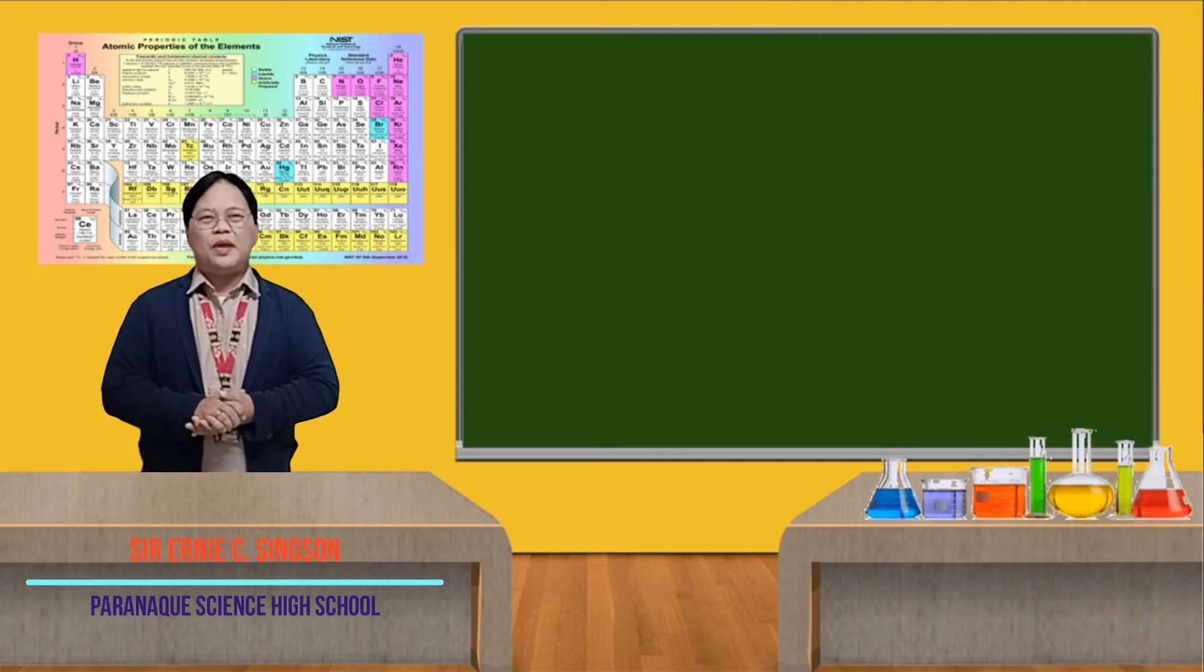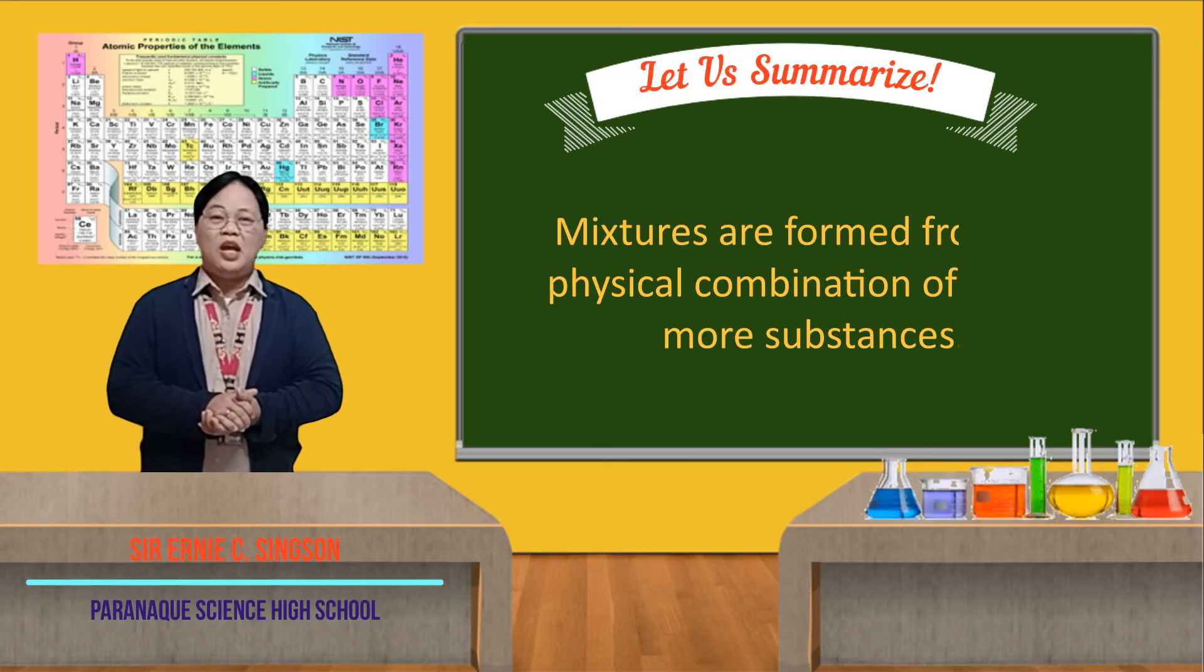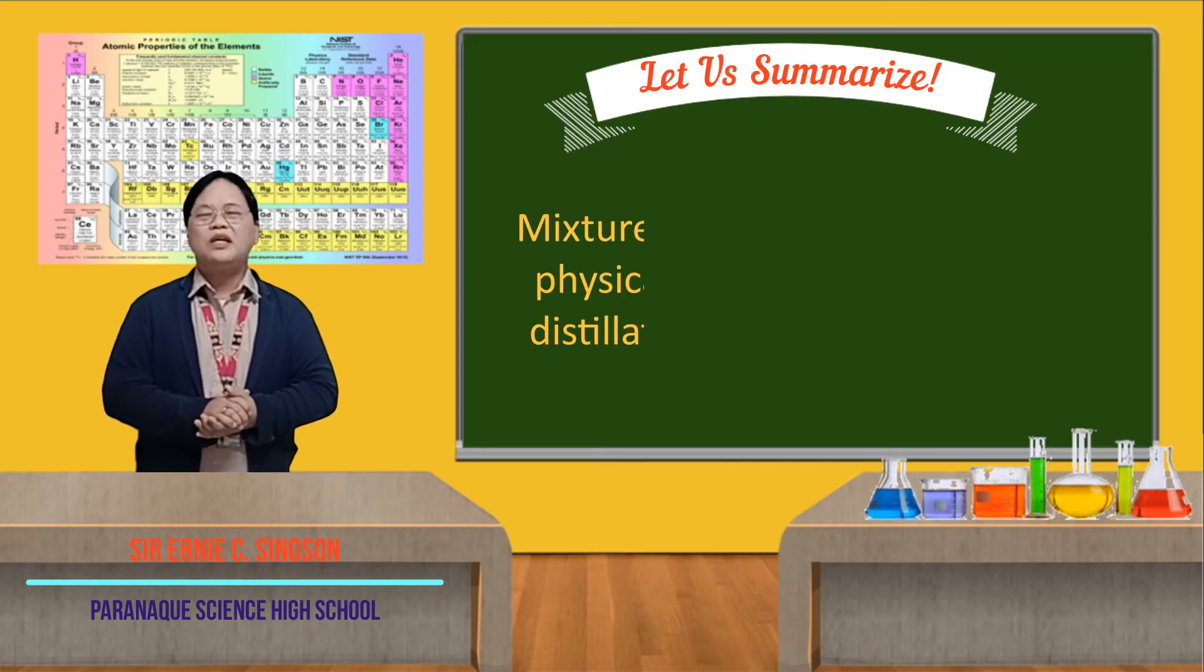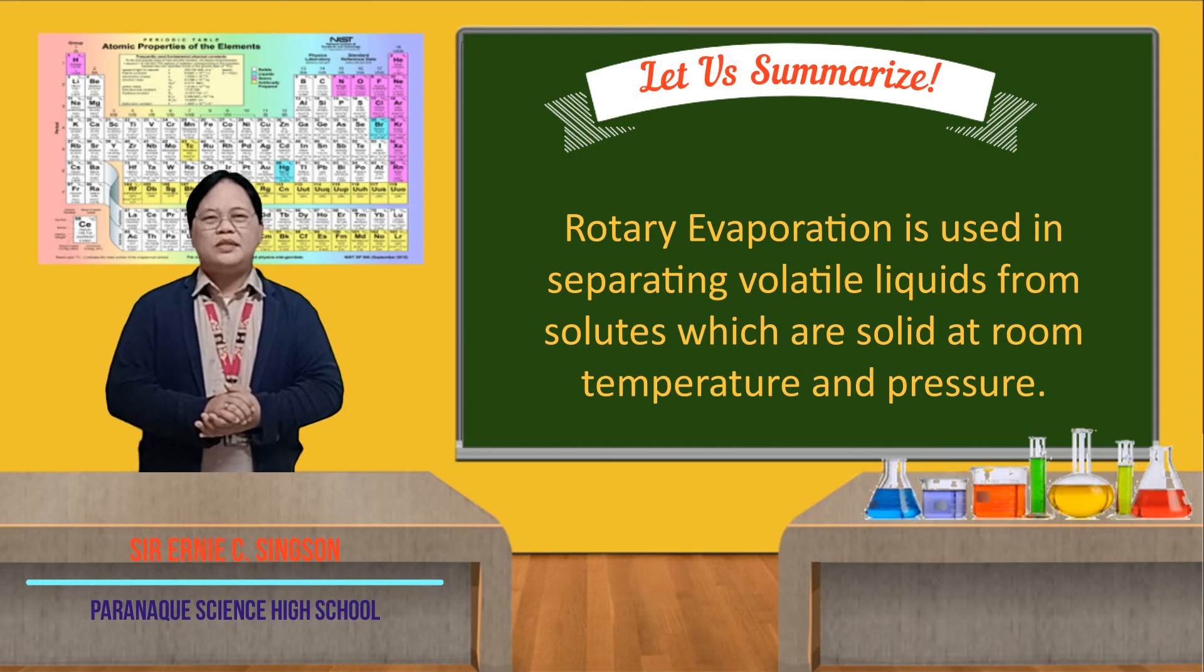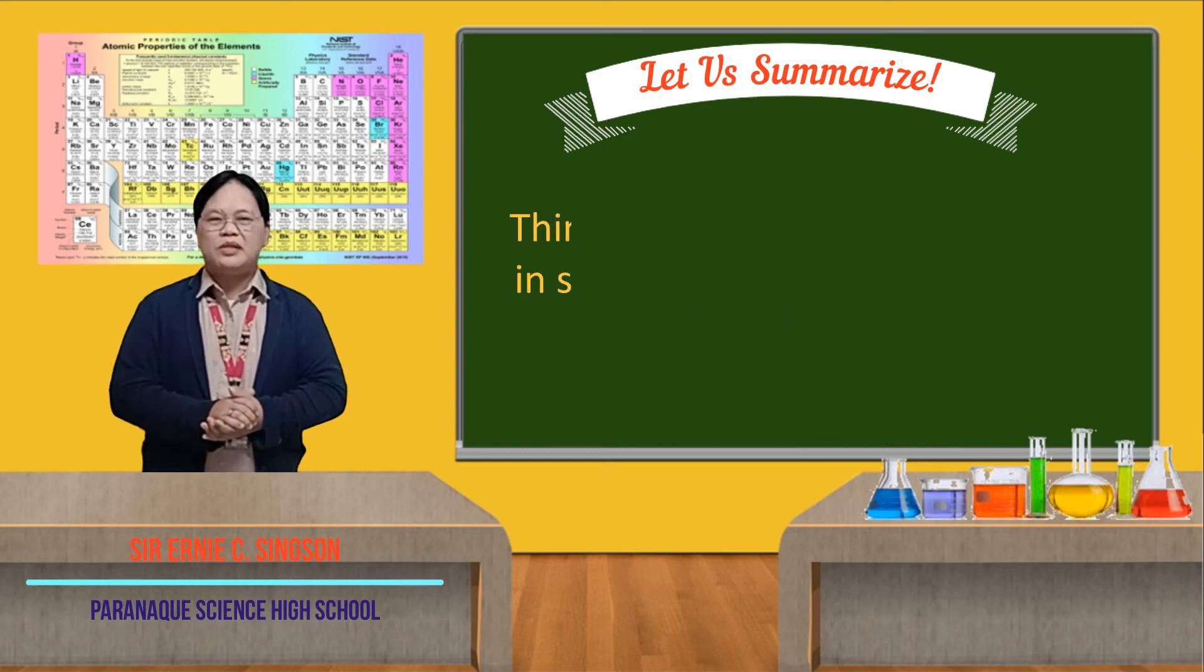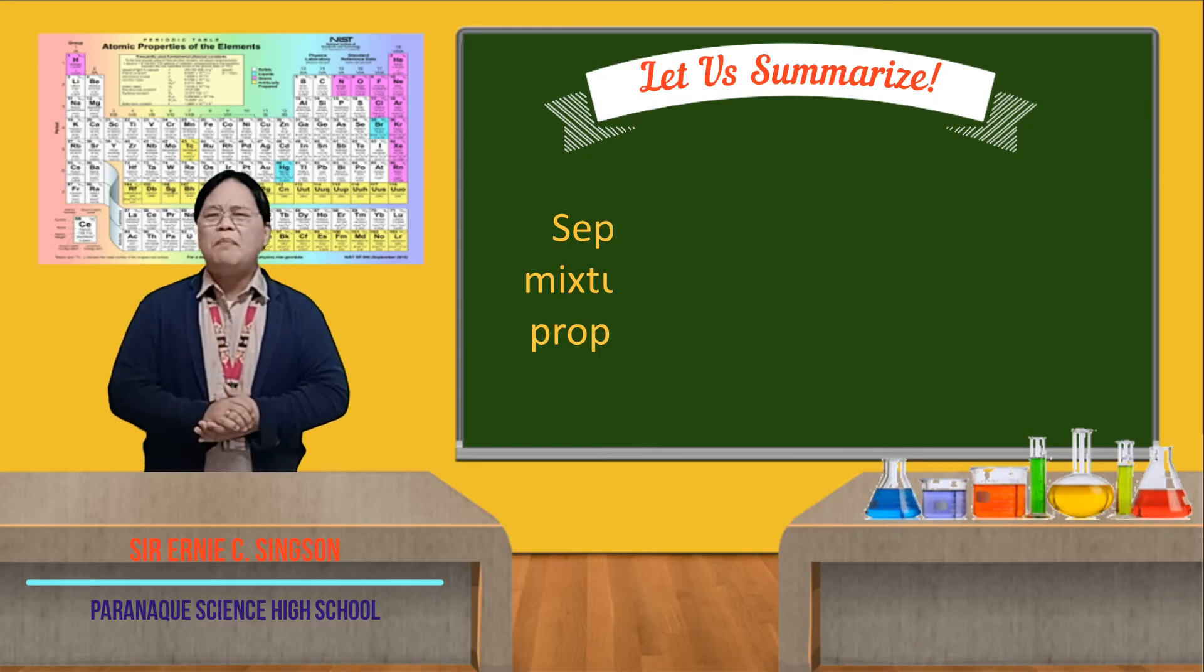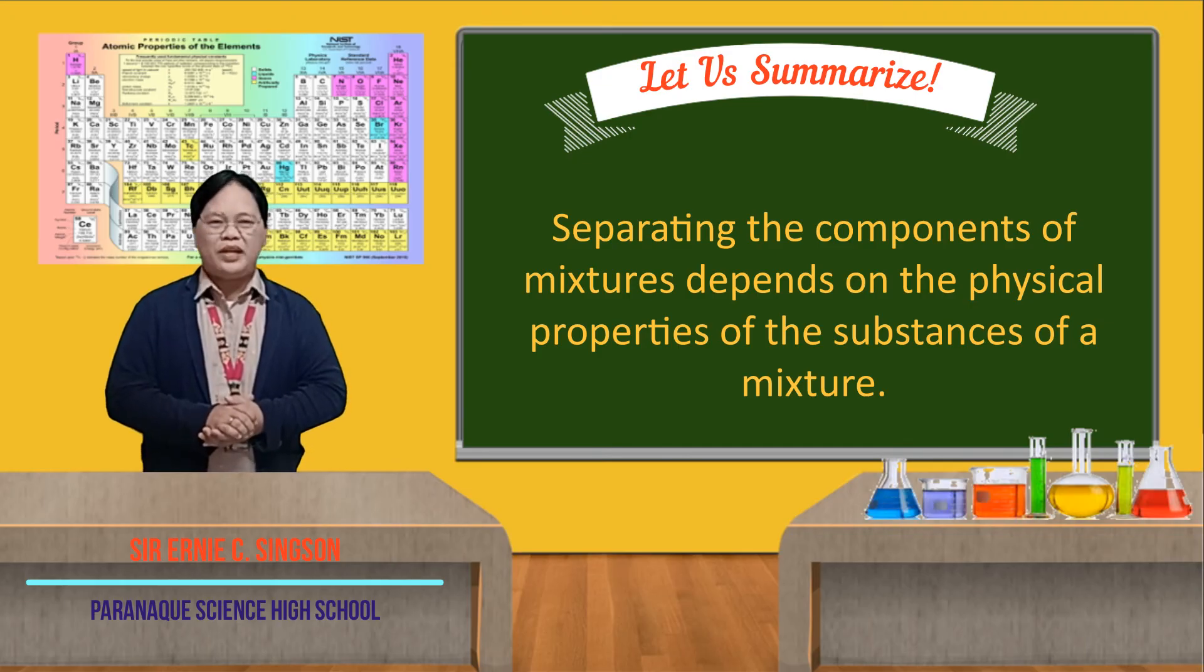Let us now summarize what we have learned for today's lesson. One, mixtures are formed from the physical combination of two or more substances. Two, mixtures can only be separated by physical means such as evaporation, distillation, chromatography among others. Three, rotary evaporation is used in separating volatile liquids from solids which are solid at room temperature and pressure. Four, thin layer chromatography is used in separating non-volatile mixtures. Five, separation of the components of the mixtures depends on the properties of the substances present in that mixture.